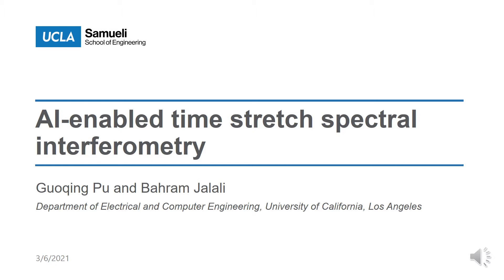Here, AI performs not classification but regression for spectrum magnitude and phase retrieval in spectral interferometry based on single-shot readout. Our results show that, compared to traditional methods, AI can achieve much more precise magnitude and phase retrieval. Thus, this AI-enabled time-stretch spectral interferometry has potential in precise temporal response reconstruction and high-speed material characterization.